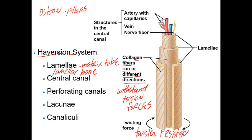Looking at other anatomy of the osteon, we have the central canal, also called the Haversian canal or osteonic canal. It is the very center of the osteon and contains blood vessels — small capillaries and veins — as well as different nerve fibers.